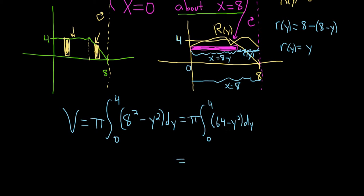All right. This is equal to, so integrating this, integrating the 64, that'll give us 64y minus, and then integrating this will give us y cubed over 3, and then we're going from 0 to 4.